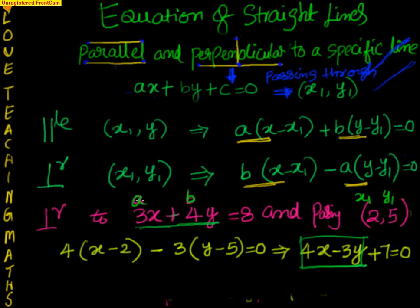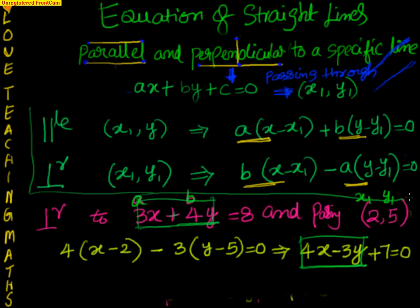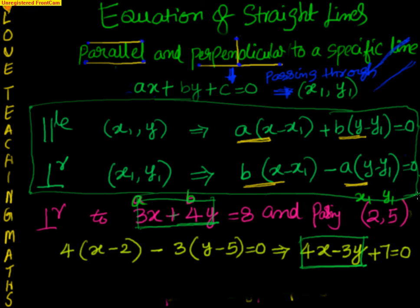In this session we have seen how to find out the equation of straight lines which are parallel and perpendicular to a specific line. The equations are straightforward: for parallel lines we equate slopes; for perpendicular lines we apply the condition that the product of slopes equals minus 1. In the next video we will see how to plot a line in a graph and also how to find the equation of the line based on the line in the graph. See you in the next video, thanks for watching, bye for now.